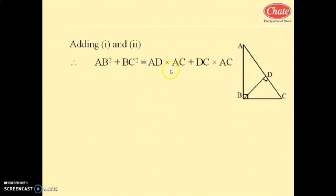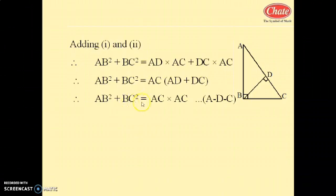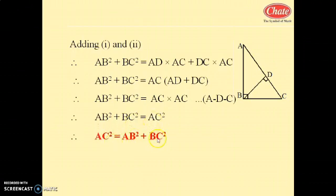Here AD into AC plus DC into AC — AC is common. So we can write AC into (AD plus DC). Now AD plus DC equals AC. So in the next step: AB squared plus BC squared equals AC into AC, which means AB squared plus BC squared equals AC squared. This is Pythagoras theorem.